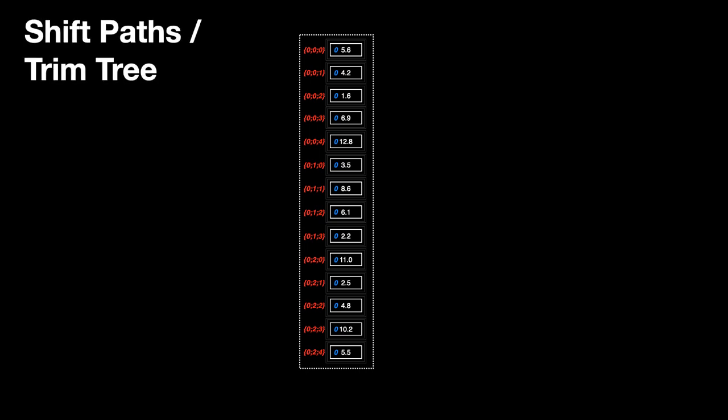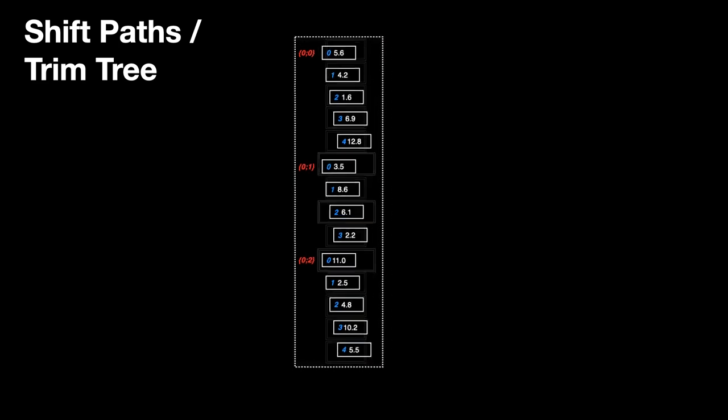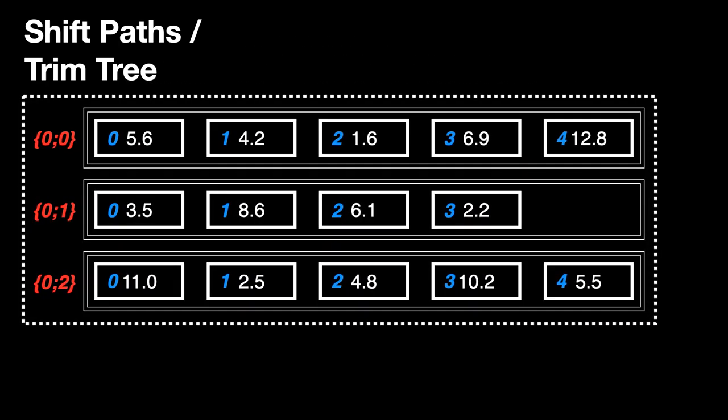The opposite of a graft is called shift paths or trim tree. There are two components in Grasshopper that perform basically the same operation. This operation takes a tree and chops off the last index of each branch path. Items that were previously on separate branches are grouped back together based on their new truncated branch paths. So items in branches that started with 01, like 010, 011, are now all back together in branch 01.